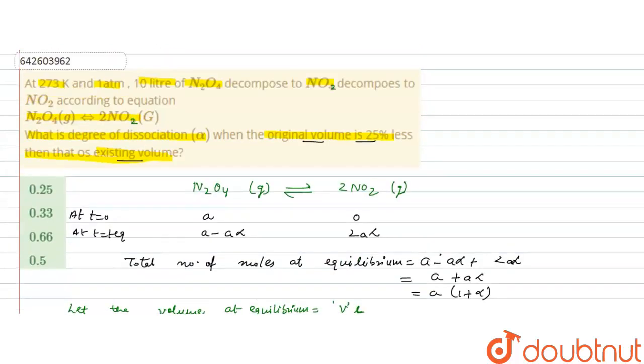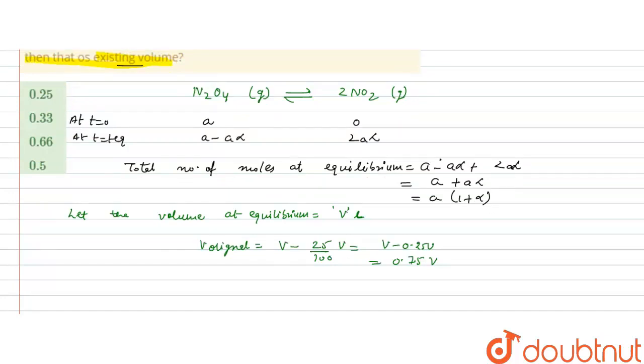It is given that at 273 Kelvin and 1 atmospheric pressure, it means the temperature and pressure are constant. Using ideal gas equation PV equals nRT, because this is a gaseous system, pressure is constant, temperature is constant given, R is a gas constant. It means V is directly proportional to number of moles. Volume original equals 0.75 times the volume at equilibrium.